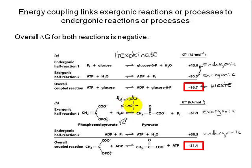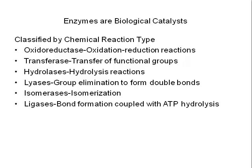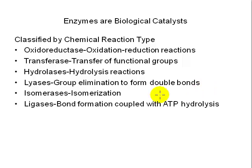Now that we have a better understanding of energy changes in biochemical reactions, let's take a closer look at the catalysts speeding them along. Every cell contains thousands of enzymes, each catalyzing highly specific reactions involving specific substrates. All enzymes can be classified as one of six types based on the type of chemical reaction: oxidoreductases catalyze redox reactions; transferases move functional groups like methyl or phosphate groups from one molecule to another; hydrolases catalyze hydrolysis reactions; lyases form double bonds by eliminating hydrogen atoms or functional groups; isomerases rearrange molecules to form isomers; and ligases create new covalent bonds using energy from ATP.